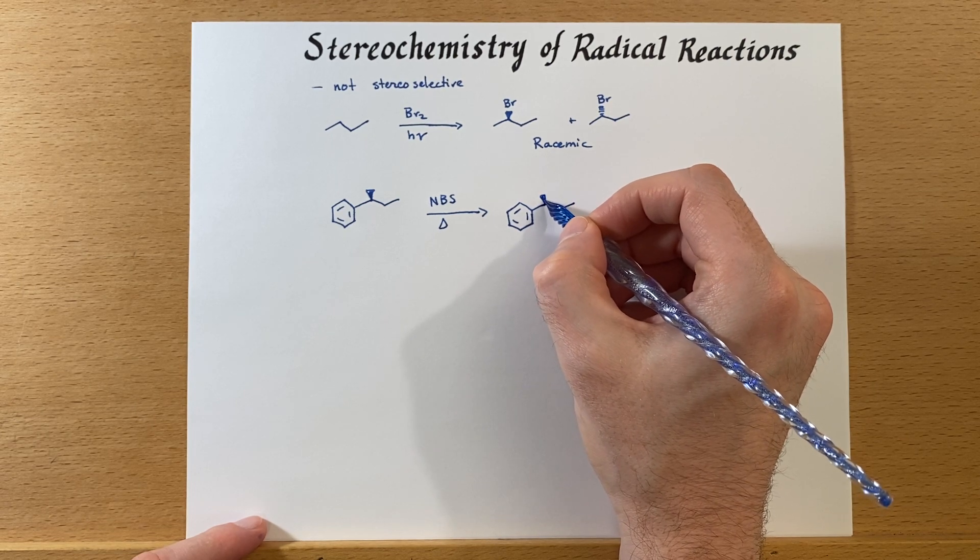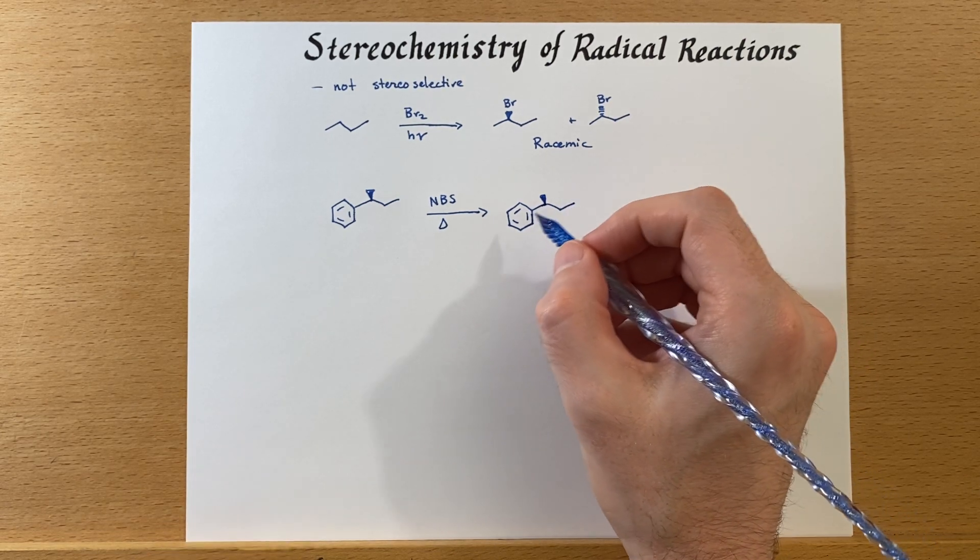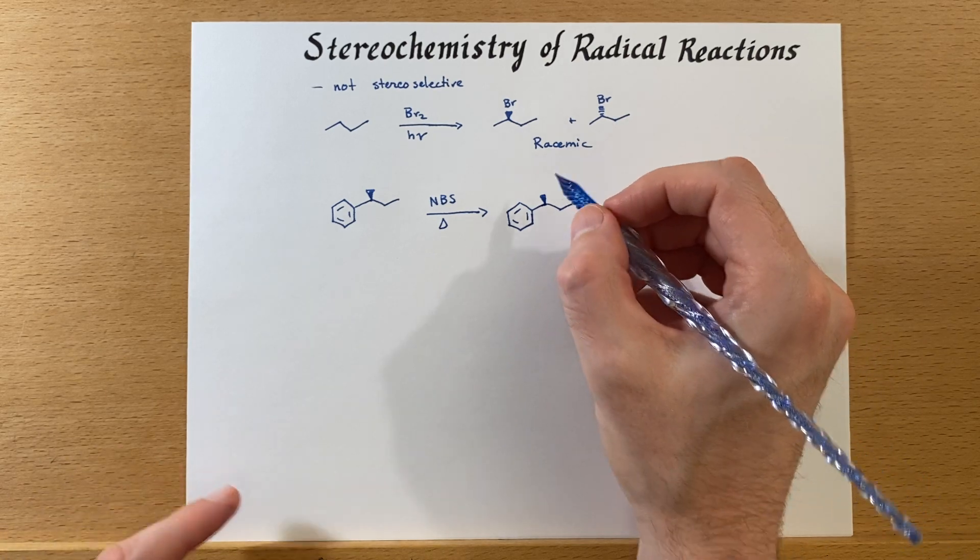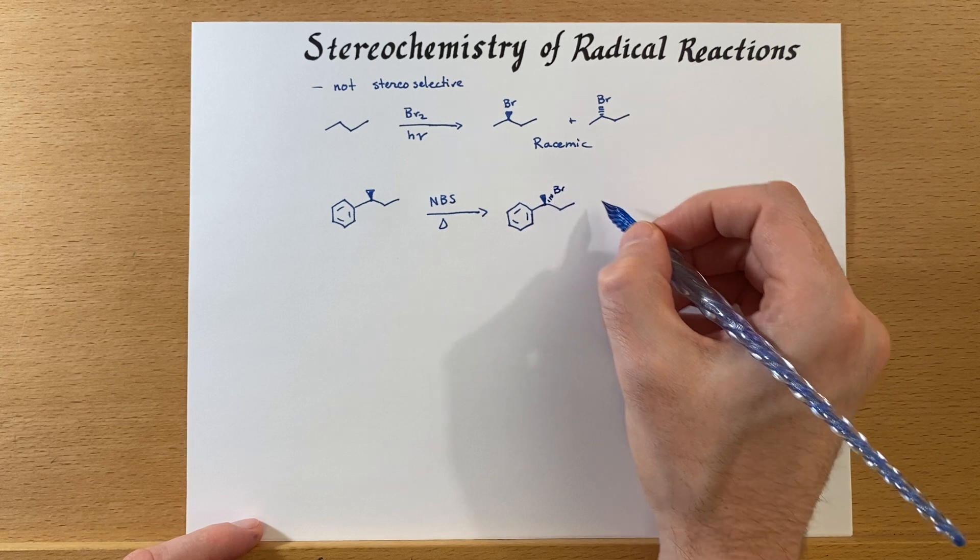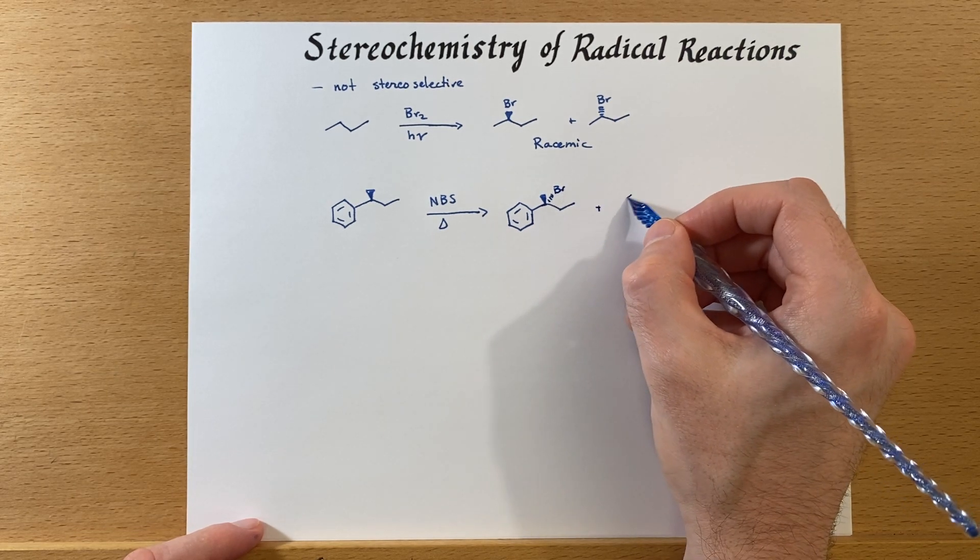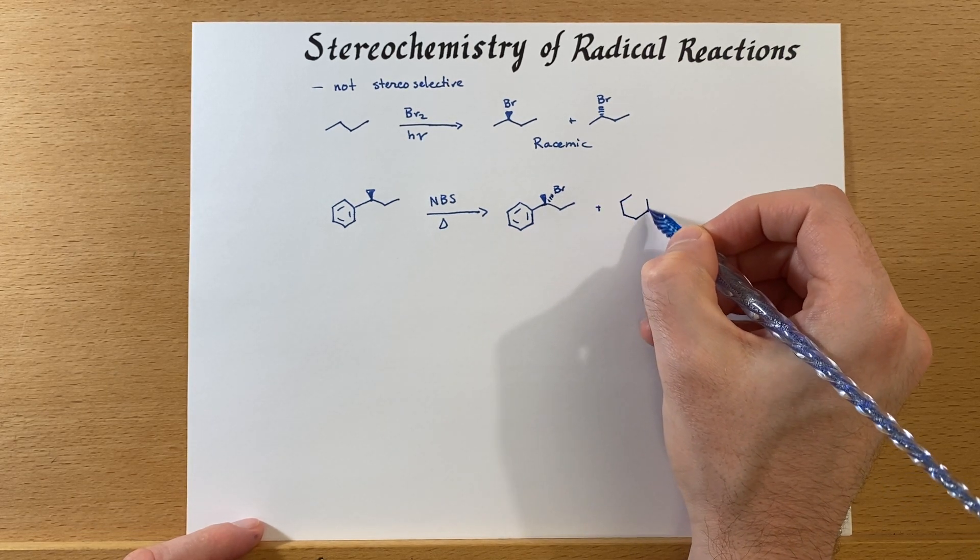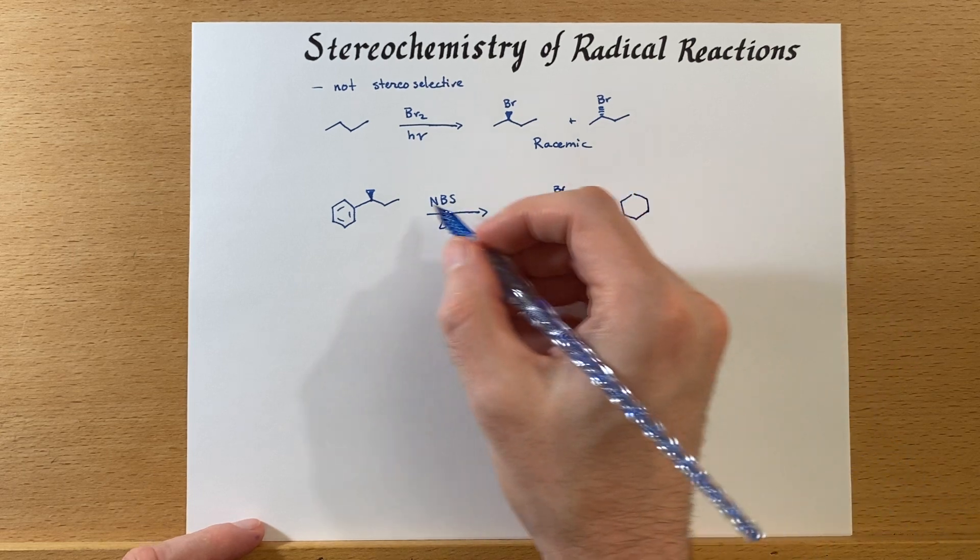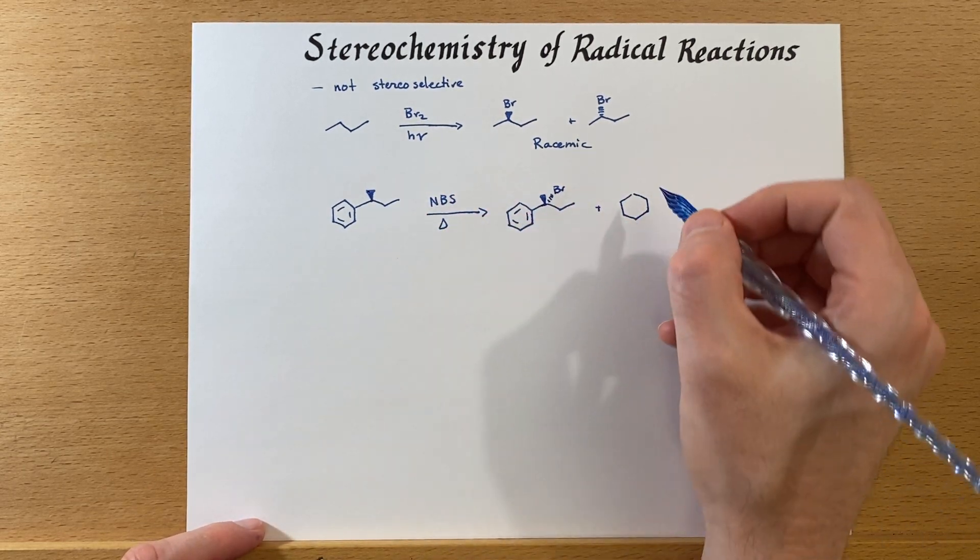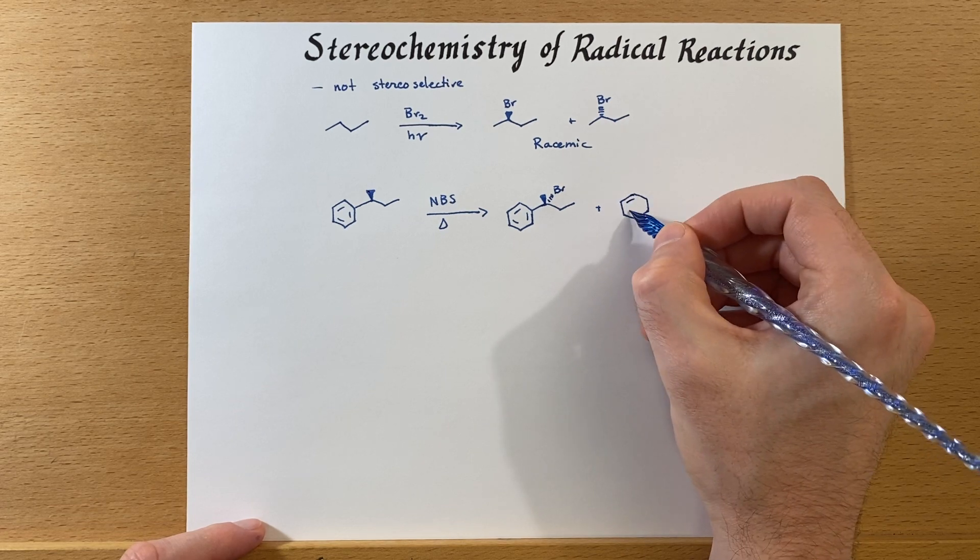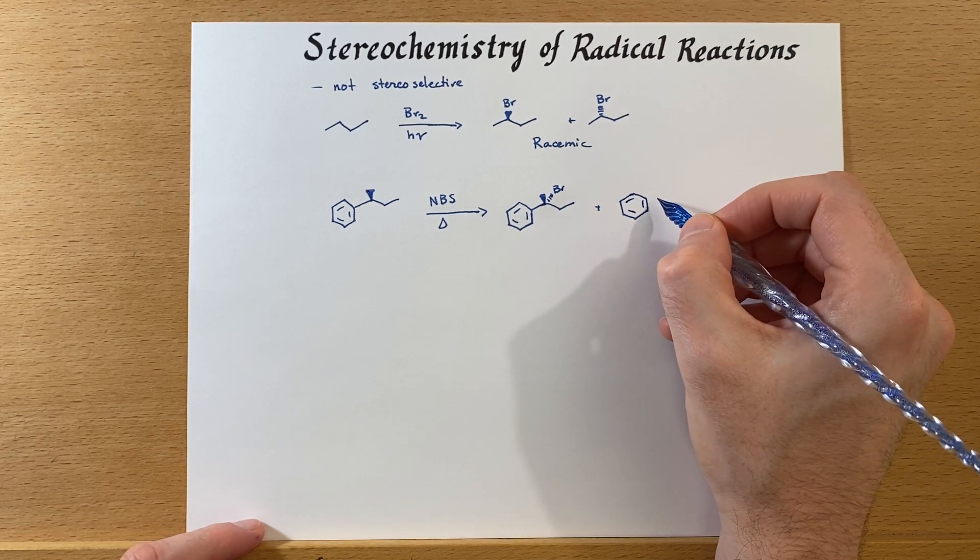I'm not sure that it would be quite racemic, but you will have a significant amount of both of these. So starting with this molecule being enantiopure really has no bearing on what we're making in the product, or at least not a significant amount.